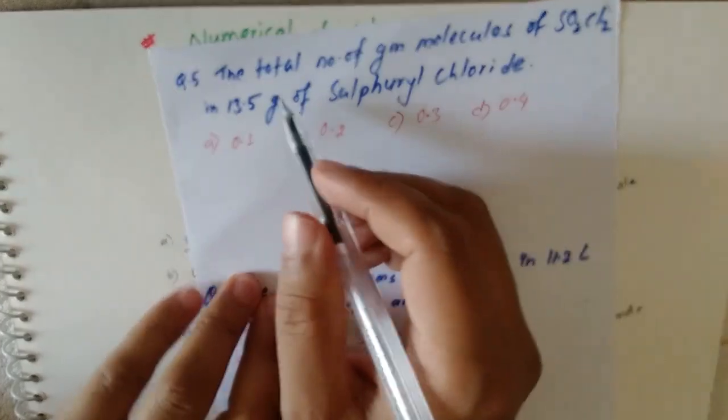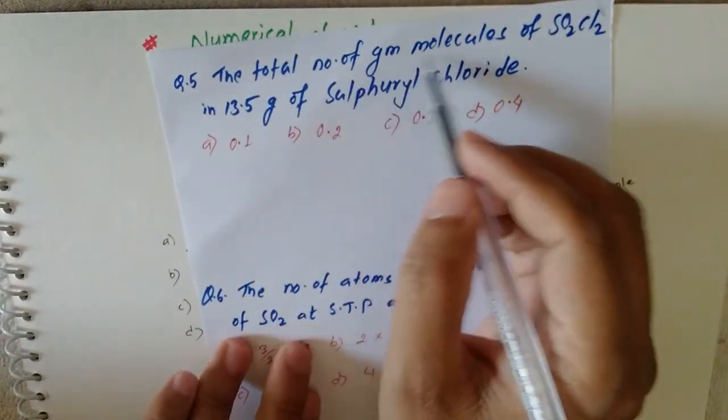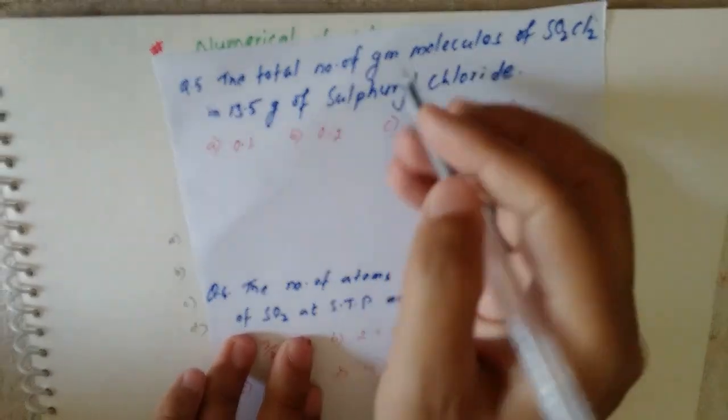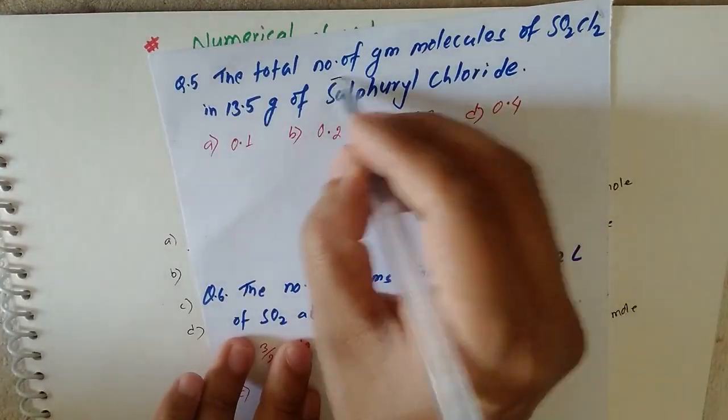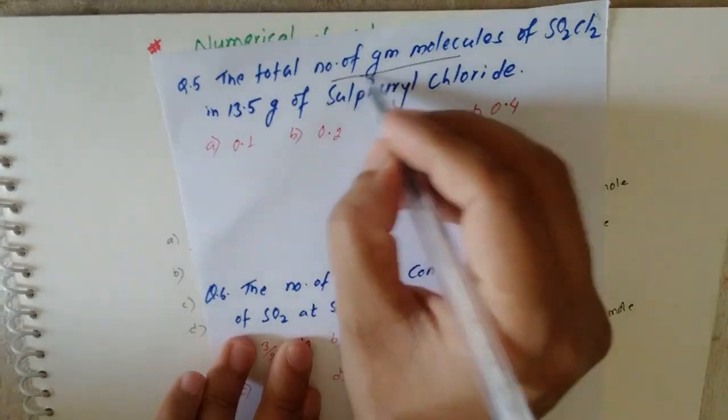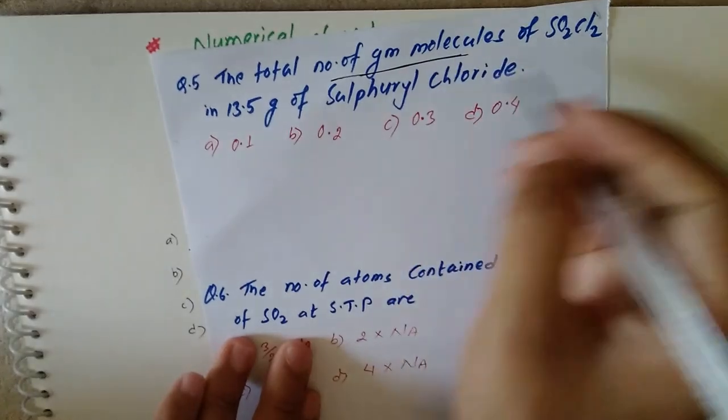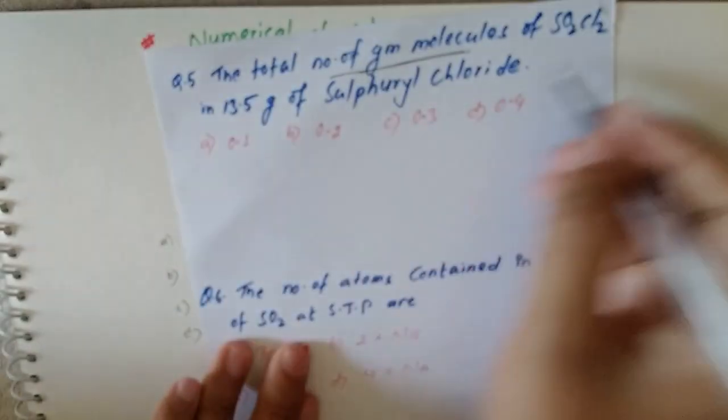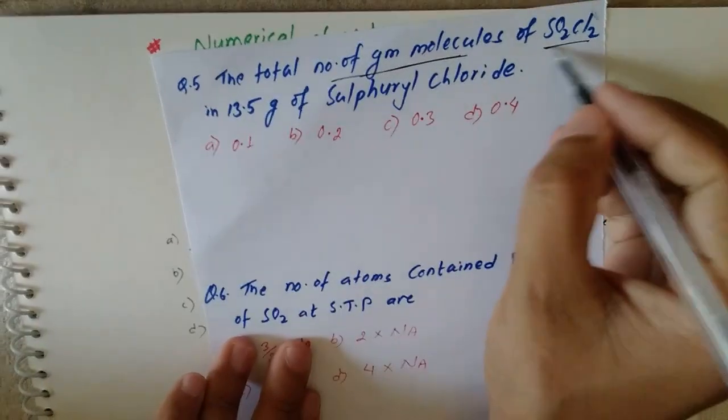Another example: the total number of gram molecules of SO2Cl2 (sulfuryl chloride).